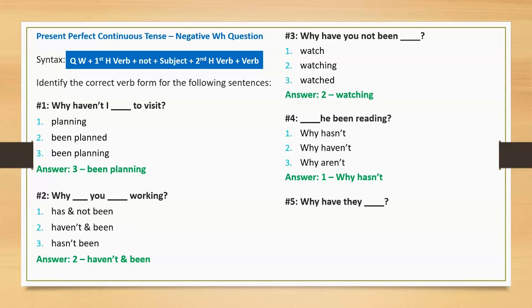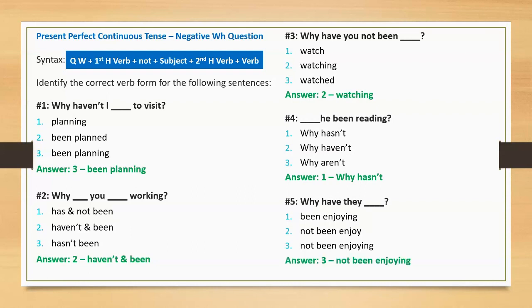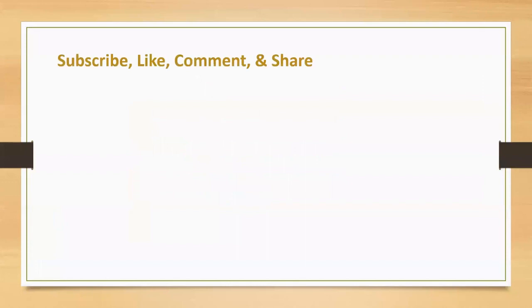Sentence five: 'Why have they blank?' Option one: been enjoying. Option two: not been enjoy. Option three: not been enjoying. Correct answer: not been enjoying. Keep watching our English language videos to improve your English fluency.